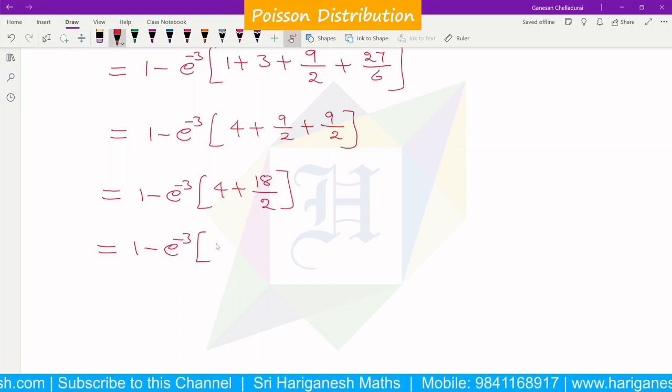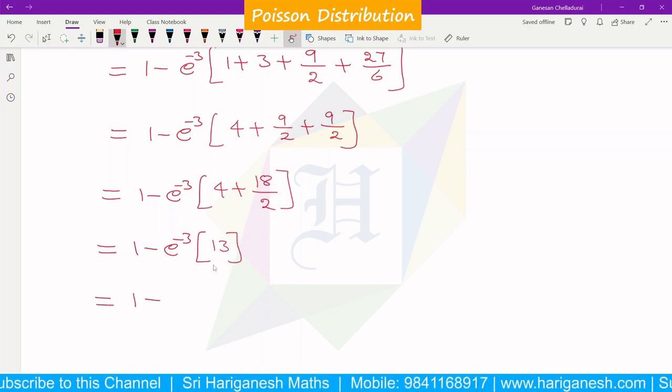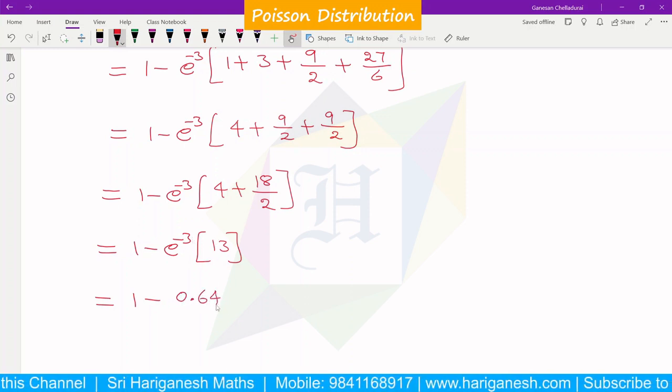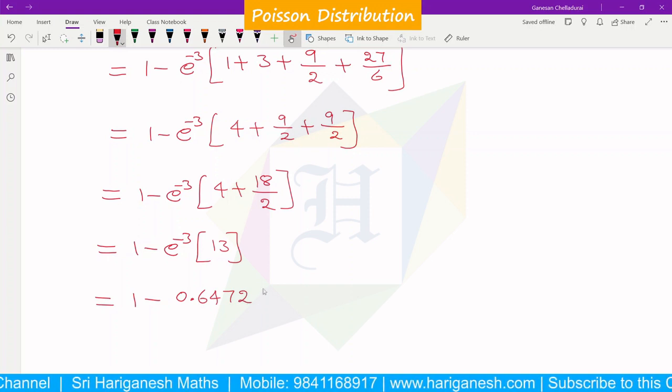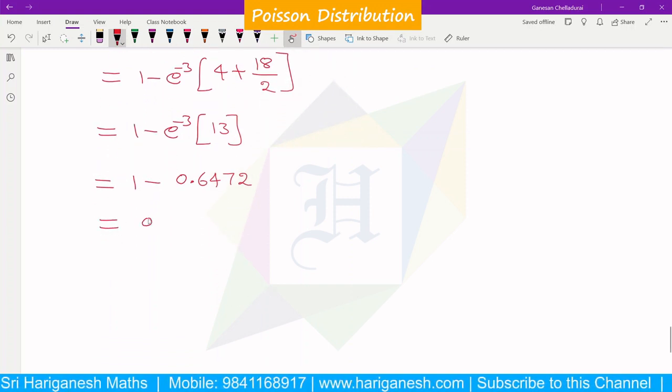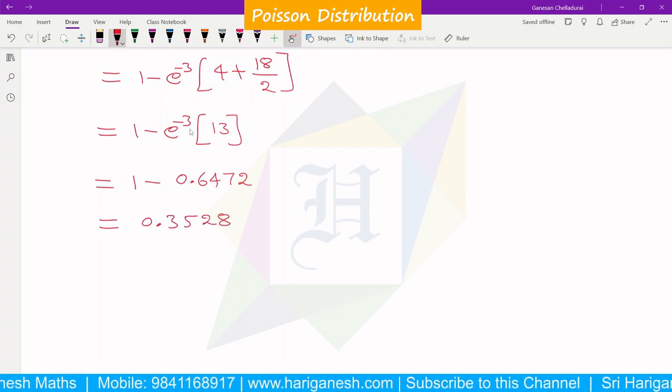So further simplifying, 1 minus e^(-3) times 18/2 which gives 9. So 1 minus e^(-3) times [9 + 4 is 13]. If we calculate 13 × e^(-3), we get 0.6472. So 1 minus this equals 0.3528.